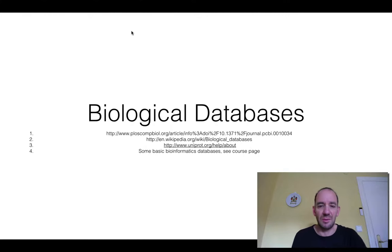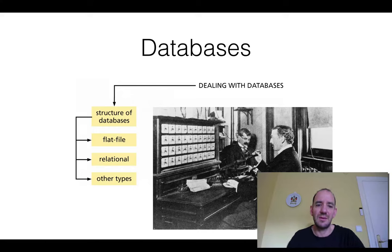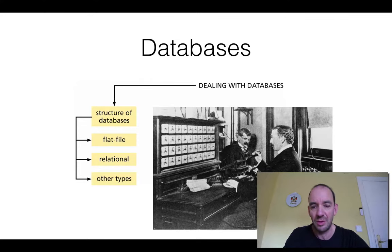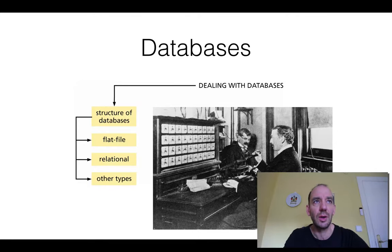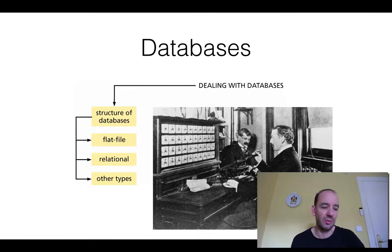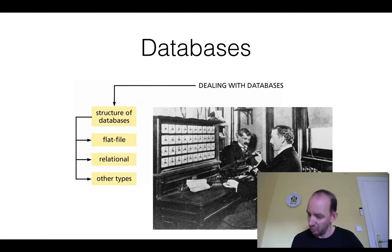A database is some type of structured data. There are different types, including flat files which are text files, relational databases which describe how things are related to each other, and other types such as object-oriented databases. For instance, Google has a database of all webpages and how they relate to each other — that's what you use when you do a Google search. Often you want to query a database, and the idea is that by having structured data you can get query results very fast. When you do a Google search, you get a reply in a few seconds or even milliseconds.